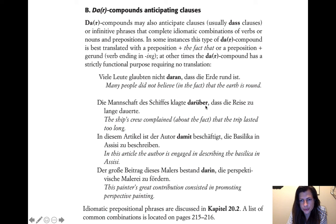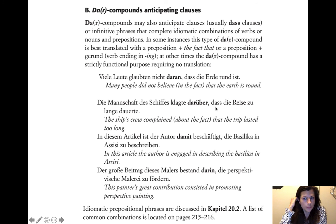'Die Mannschaft des Schiffes klagte darüber, dass die Reise zu lange dauerte.' The ship's crew complained — 'klagte' — and then 'darüber.' So the crew complained about it, that the trip lasted too long. If you translate it as 'complained about it that the trip lasted too long,' it doesn't sound very elegant. So 'darüber' means 'about it' — about what? About this whole next clause. You can say 'about the fact that,' or just leave it out: 'The ship's crew complained that the trip lasted too long.'